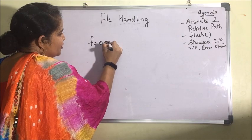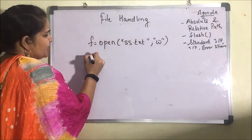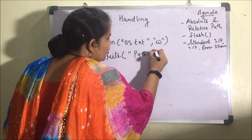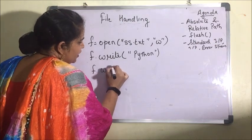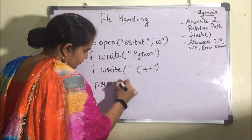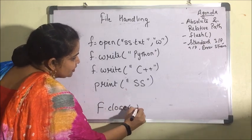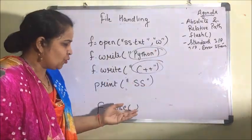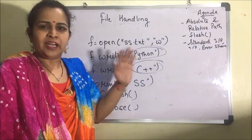Suppose I have opened a file: f = open('ss.txt', 'w'). I have written f.write('python'), started some other work, then written f.write('c++'). Until I close the file with f.close(), all this data will be in the buffer. So if we want to transfer this to the file before it closes, we write f.flush(). This will save data from getting corrupted.